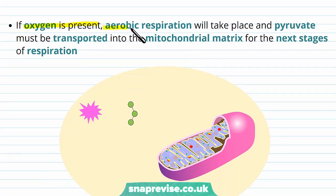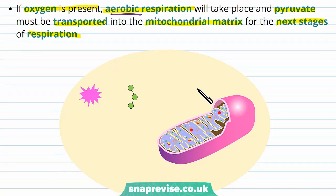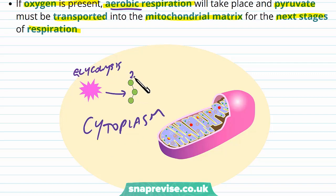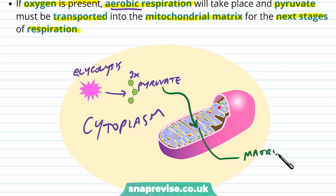If oxygen is present, then aerobic respiration takes place, and pyruvate needs to be transported into the mitochondrial matrix. This is where the next stages of respiration will occur, and in this video we'll be talking about an aerobic situation. So glycolysis has occurred in the cytoplasm, and one of the main products are two molecules of pyruvate. The next stage is to get this pyruvate into the matrix of the mitochondria, which is the fluid and solution in the centre of the mitochondria.